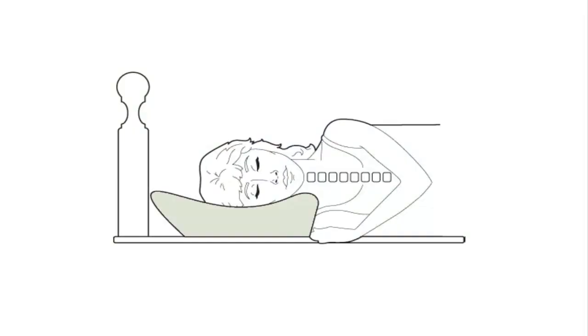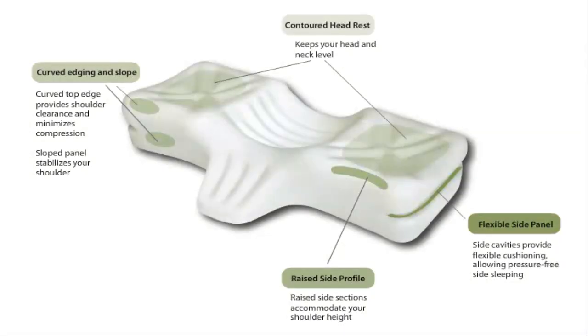For side sleeping, to the left and right of the center cavity are two raised sections. The height of these sections correspond to the shoulder height. The top of each section is contoured to allow your head and neck to be level, and airflow is provided by ridges in the contours. A cavity is located in each side section to allow for pressure-free side sleeping.